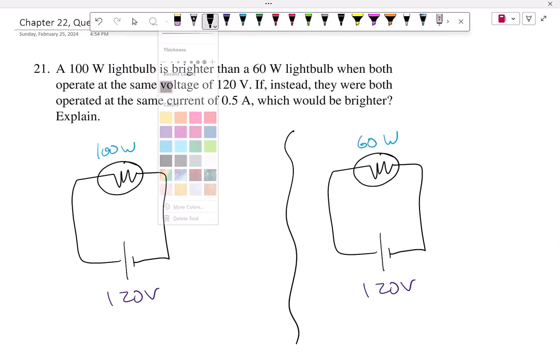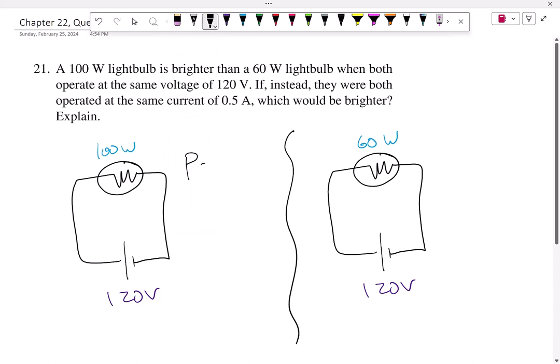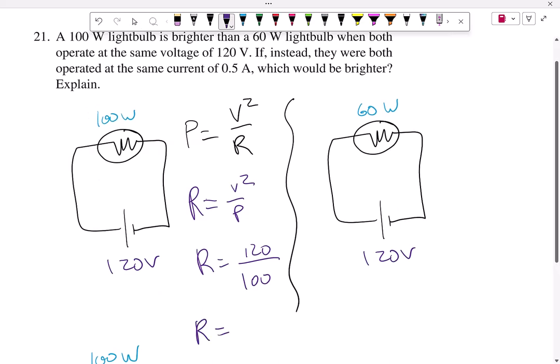All right, so what I'm gonna do is find out the resistance here, and I'm gonna use the facts that are constant between both of them. I know that it's 120 volts for both, and that the power is 100 watts. So I can use V squared over R to find out the resistance. So the resistance here is going to be V squared over the power. So the resistance here is gonna be 120 squared divided by the power, which is 100. So 120 squared divided by 100, that's 144. So I get 144 ohms for the 100 watt.